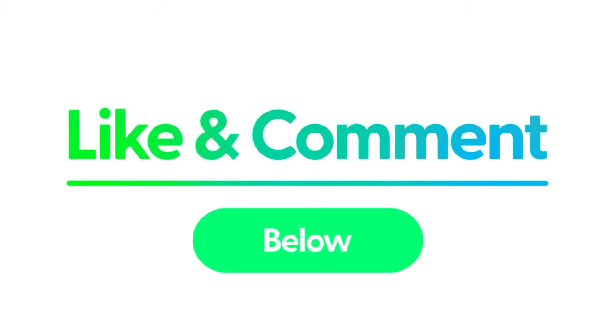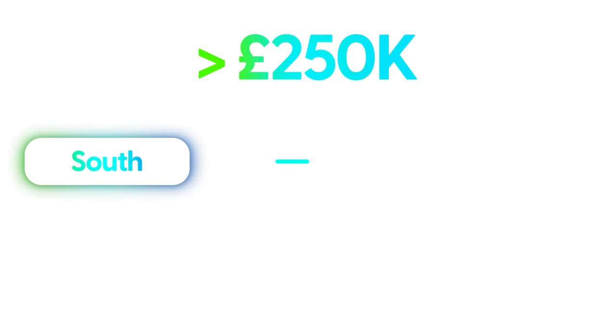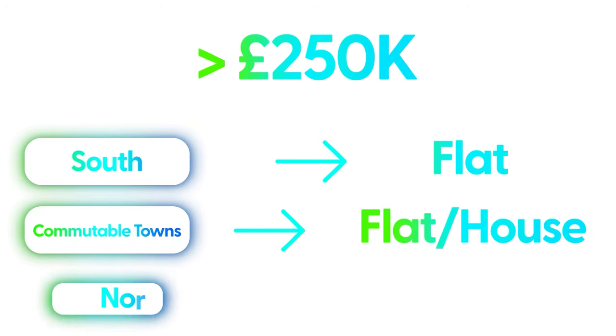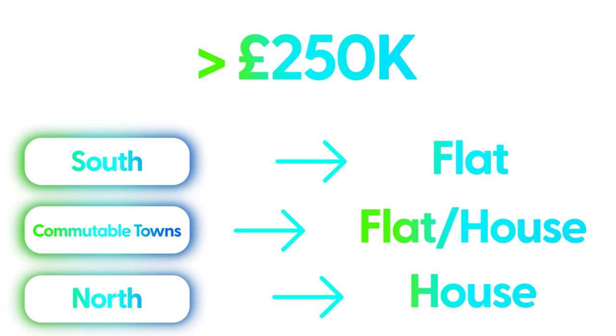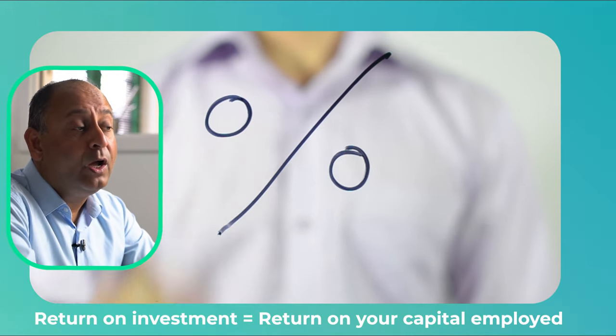Buy-to-lets work extremely well in areas where price points are below £250,000. These can be flats or houses. In the south of the country you might only find flats below £250,000. In commuter belt towns it might be a flat or a house, and in smaller towns — typically north of the country — you can still buy a house below £250,000. The type of stock doesn't really matter; what matters is the return. In larger towns and commuter belt towns, we look for a gross yield of a minimum of 5.5%, and in smaller towns we look for a gross yield of 7% plus. Your focus should always be on the percentage return on investment rather than the actual physical amount you're making.